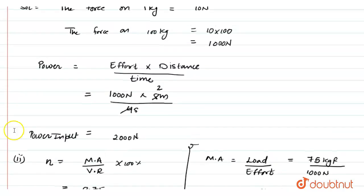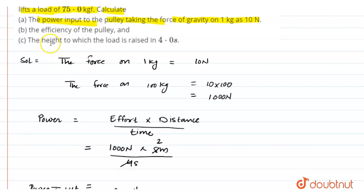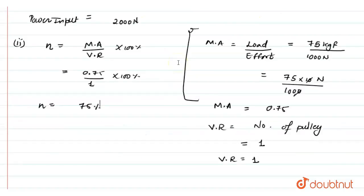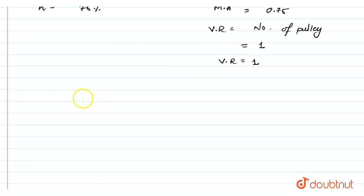Now, in third part we have to calculate the height of load raised in 4 seconds. As we know the velocity ratio is equal to 1. Therefore, distance moved by load...